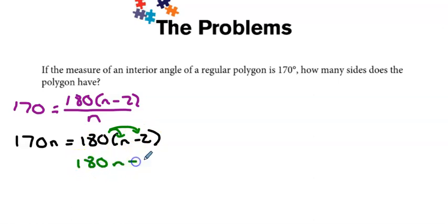So, 180n minus 360. And carrying this term, this expression down, 170n is equal to all of that.